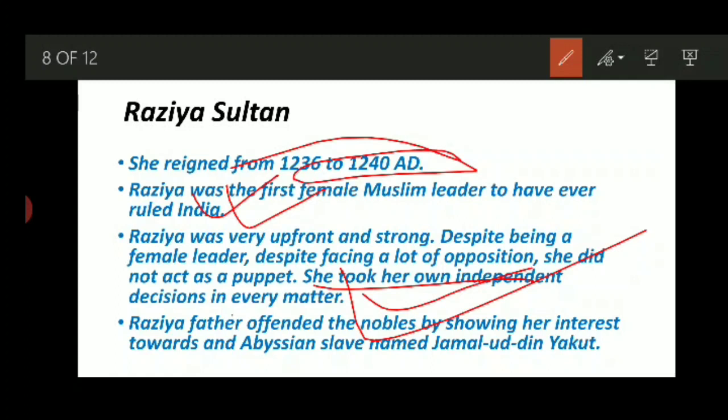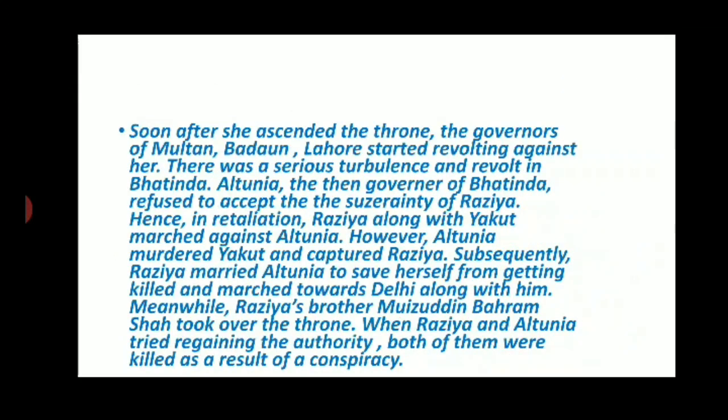She was even offended by the fact that people started addressing her as a Sultana, because she was completely against this gender stereotype. Razia further offended the nobles by showing her interest towards an Abyssinian slave named Jamaluddin Yakut. She had a sort of affinity towards him, though nothing is much clearer in this aspect.